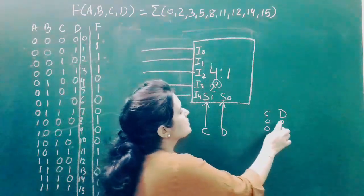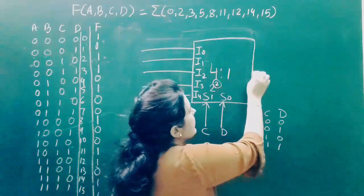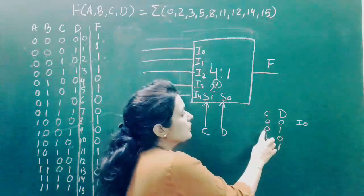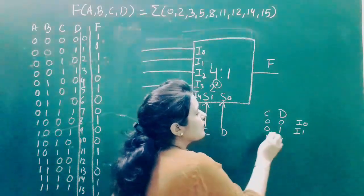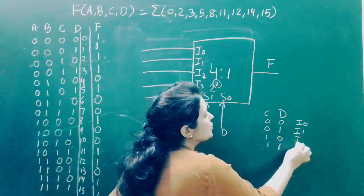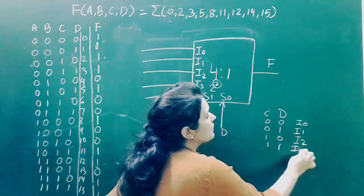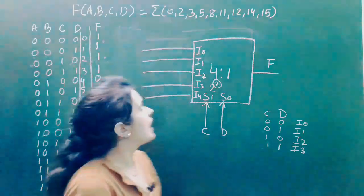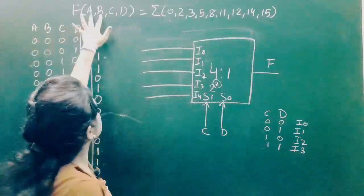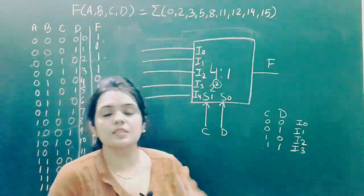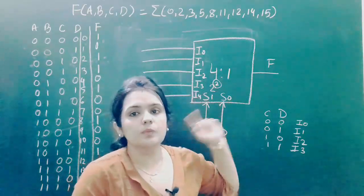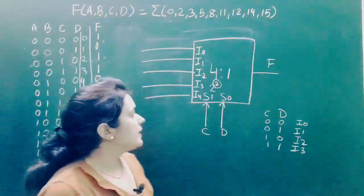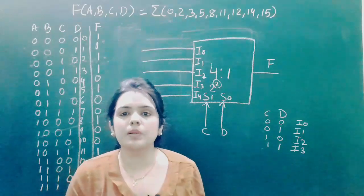When C and D = 00, I0 is selected for output. When C and D = 01, I1 is selected. When C and D = 10, I2 is selected. When C and D = 11, I3 is selected. The two remaining variables A and B must be connected to the input lines, but we can't connect them directly — we need to build an implementation table.